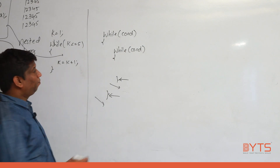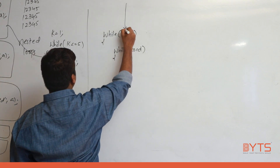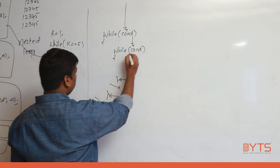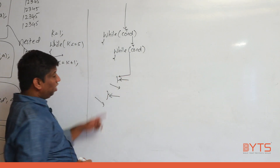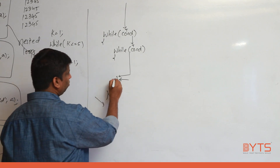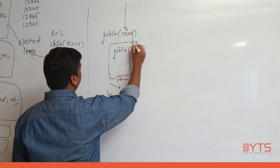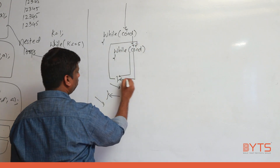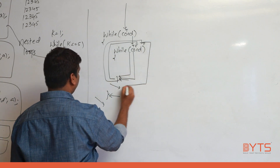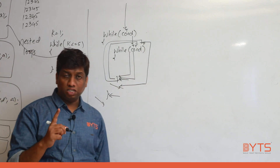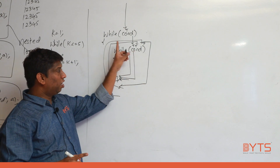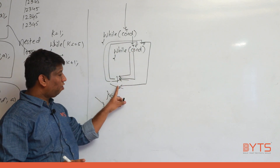The flow always comes from the top. When the outer condition is true, we execute statements. When the inner condition is true, we execute and keep looping. When we reach the end of the inner loop, we come back to the inner loop condition. When the inner condition is false, we come out of the inner loop. When we reach the end of the outer loop, we come back to the outer loop condition.